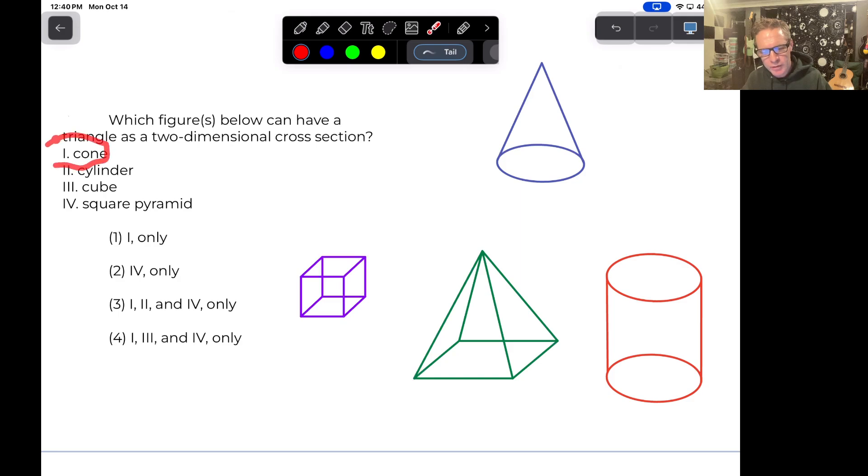Number one, by the way, these are Roman numerals. Number one is a cone. Number two is a cylinder. Number three is a cube. And number four is a square pyramid.